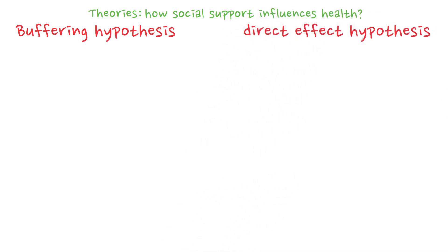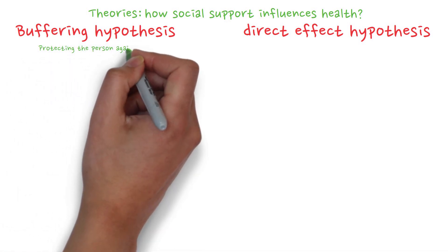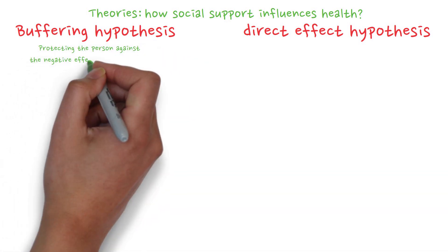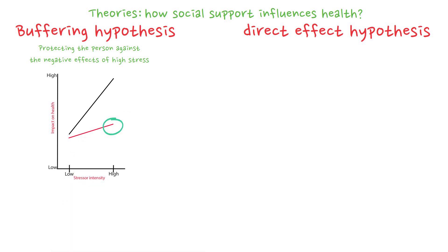According to the buffering hypothesis, social support affects health by protecting the person against the negative effects of high stress. We have a graph here of the buffering hypothesis. As you can see, when you experience low stress, little or no buffering happens. But when you experience high stress, social support helps. So according to this theory, the protective function of social support is mainly effective when a person encounters a strong stressor.